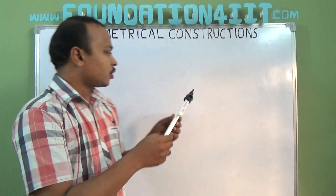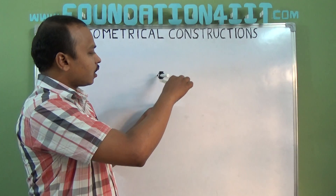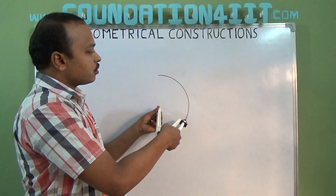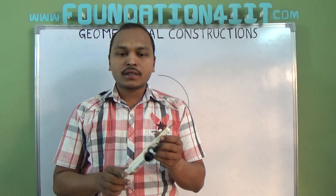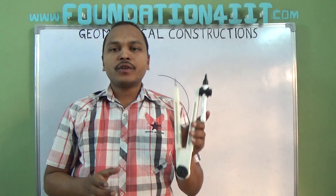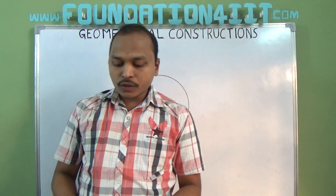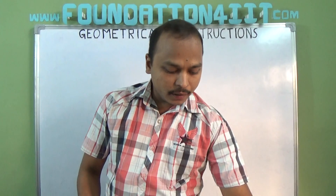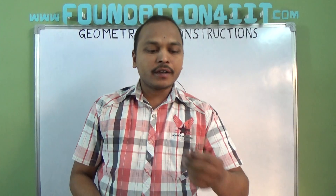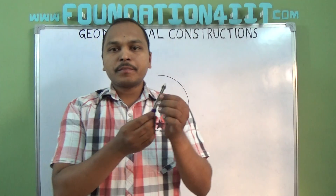If you want to draw arcs you can use the compass, or to draw full circles you also use this compass. Those are the main things. And the divider — I'll show a small one.